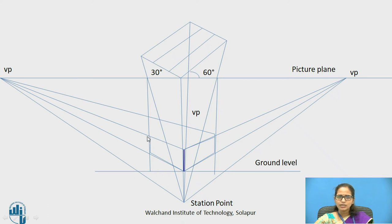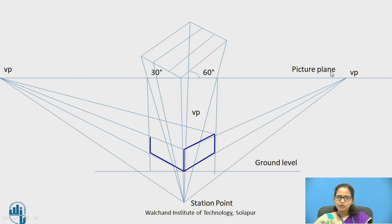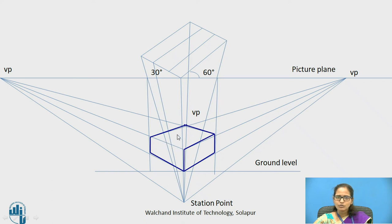The point obtained is joined to the vanishing point on one side. The second point is joined to the second vanishing point. Where this meets, you drop a vertical line. This part has to be darkened to represent the object being drawn. The overall projection represents the back view of that object.